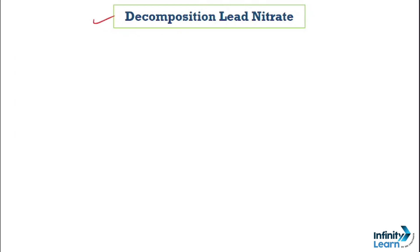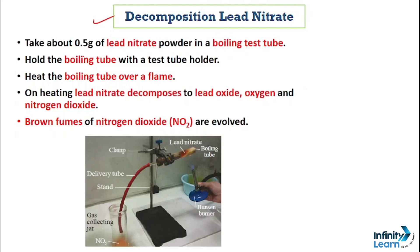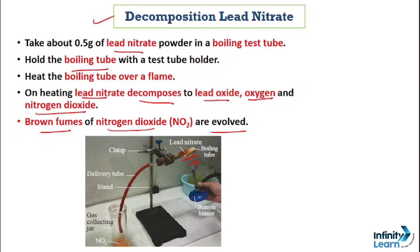Here is one more example of a decomposition reaction — the decomposition of lead nitrate. Take approximately 0.5 grams of lead nitrate powder in a boiling tube and hold it with a test tube holder. After heating, the lead nitrate decomposes to lead oxide, oxygen, and nitrogen dioxide, and you will see brown fumes of nitrogen dioxide being evolved. This brownish content visible in the jar is our nitrogen dioxide.